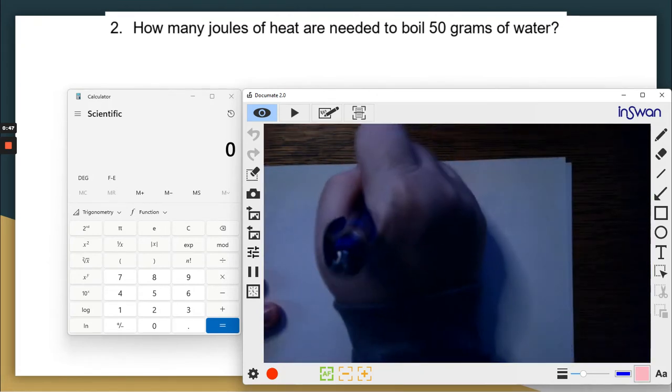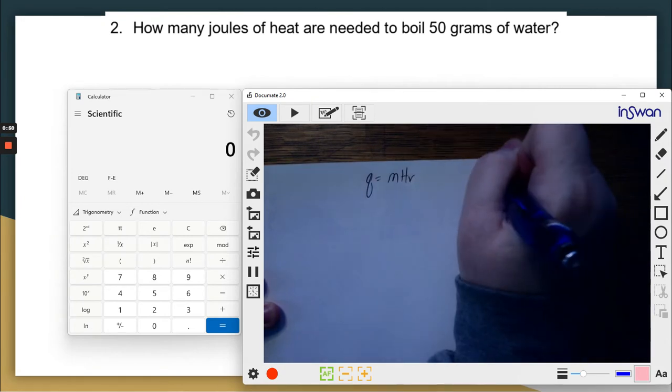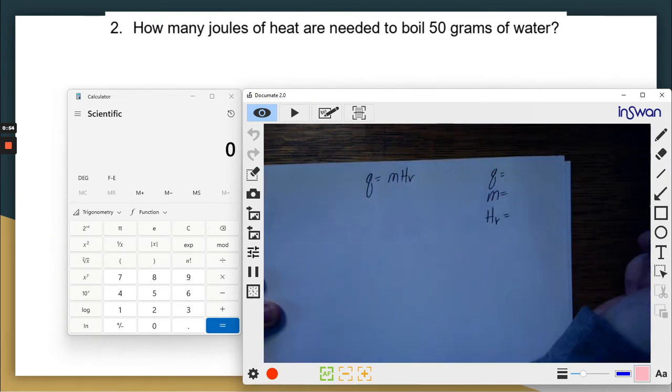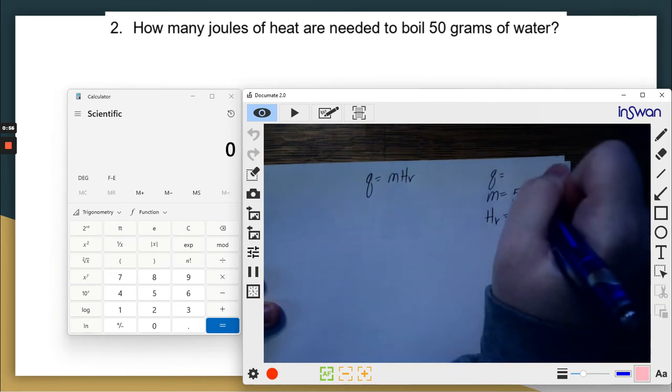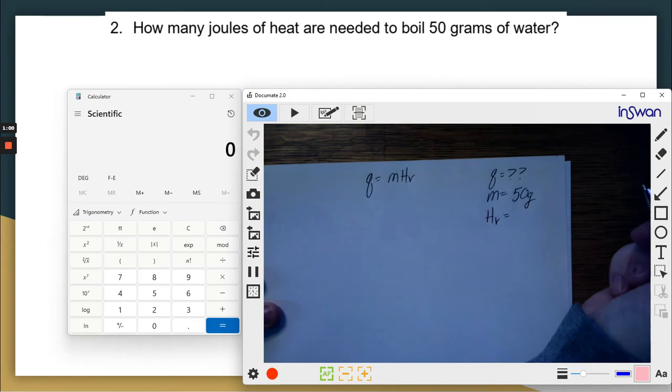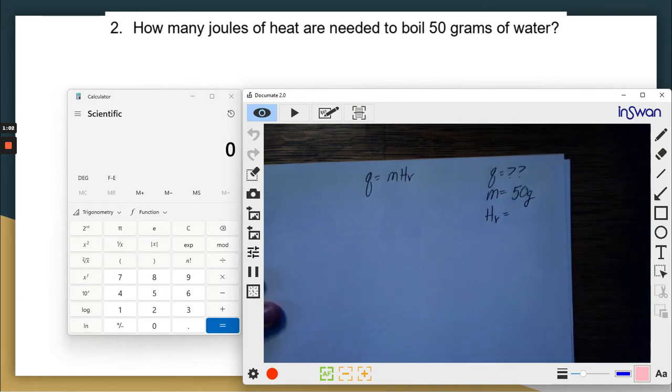Q equals MHV. Write my list of variables: Q, MHV. What does the problem give me? 50 grams. Heat or Q is what I'm trying to find. Well, I can't have a second variable. Oh, no. What am I going to do?